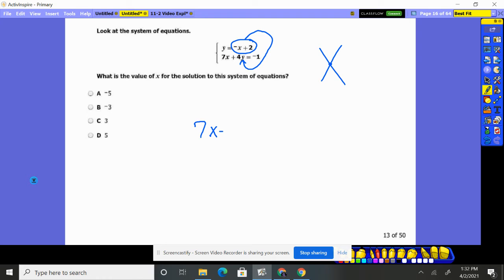So it's 7 times x plus 4 times y. Well, you and I know y is represented by that, negative x plus 2, the opposite of x plus 2, equals negative 1.